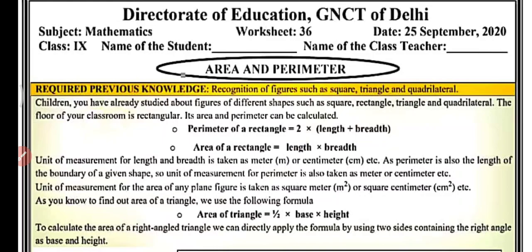Required previous knowledge: recognition of figures such as square, triangle, and quadrilateral. Before studying area and perimeter, you should know about different shapes and be able to identify them — such as square, triangle, quadrilateral. What is a square? How many types of triangles are there? Like equilateral, isosceles, scalene, right angle triangle — you should know about all of these.